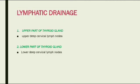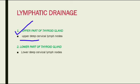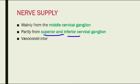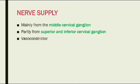For lymphatic drainage: the upper part of the thyroid gland drains into the upper deep cervical lymph nodes, and the lower part drains into the lower deep cervical lymph nodes — easy to remember as upper drains upper and lower drains lower. For nerve supply: the thyroid gland is mainly supplied by the middle cervical ganglion and partly by the superior and inferior cervical ganglia. All of these are vasoconstrictors.